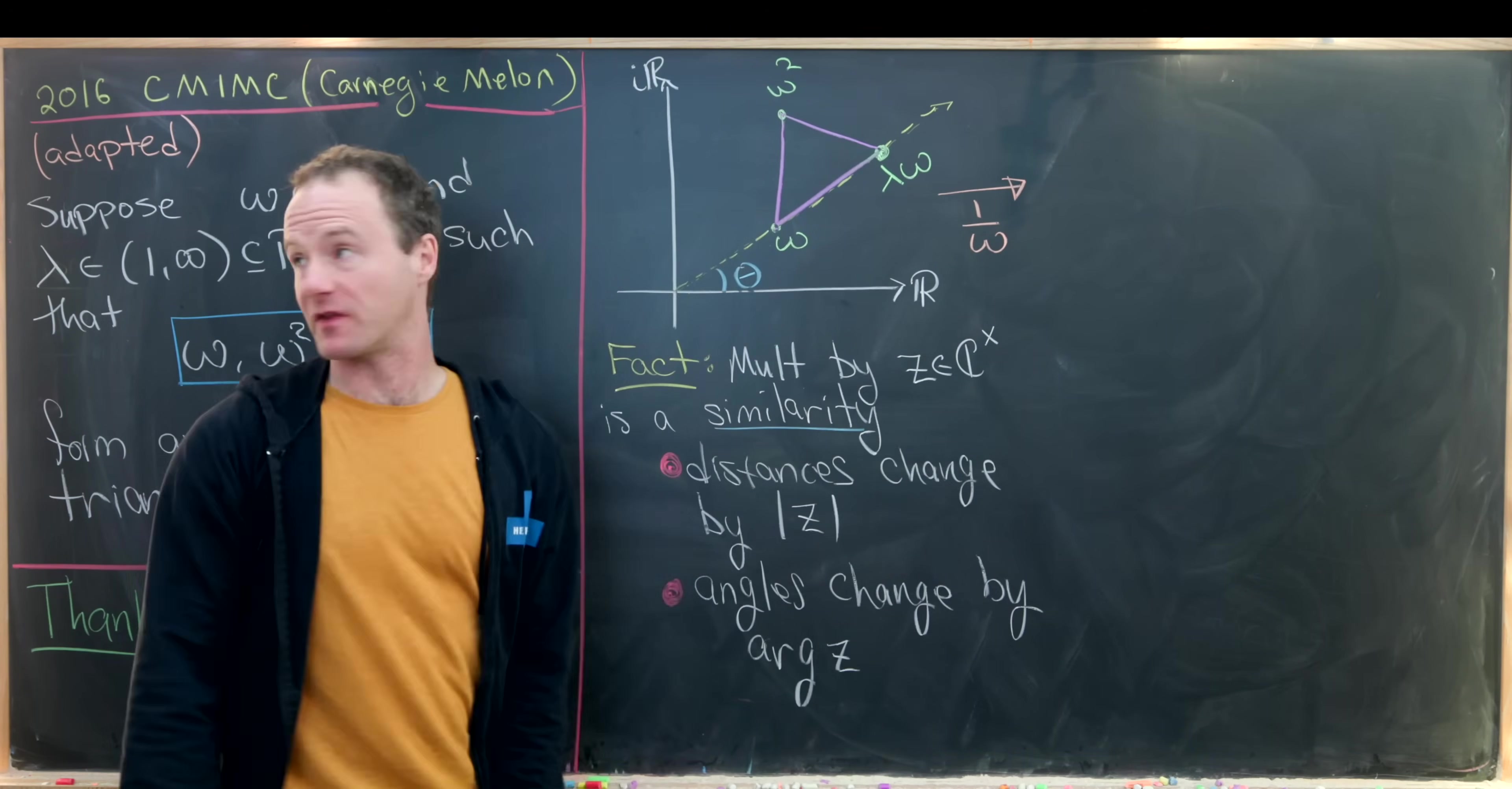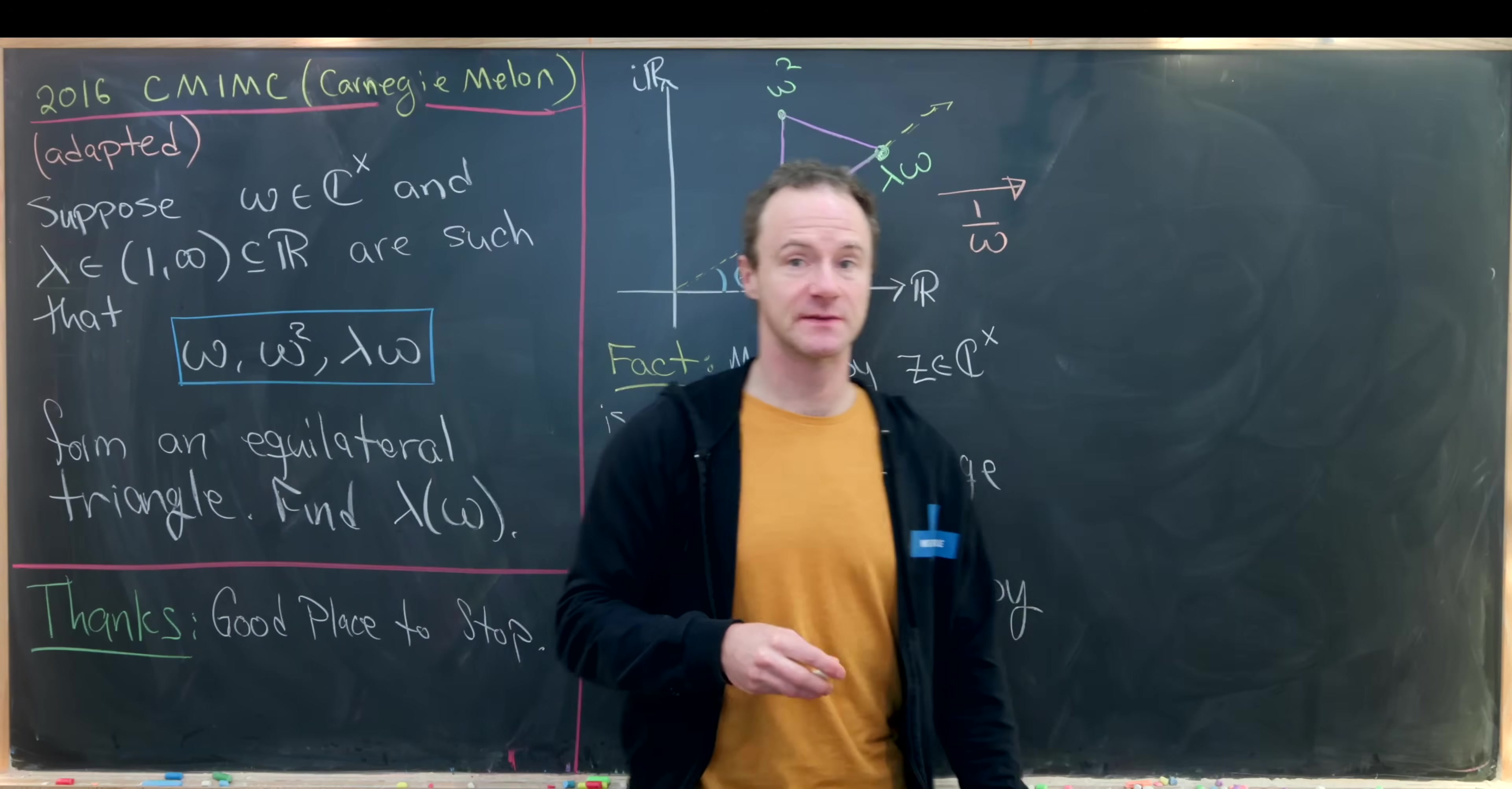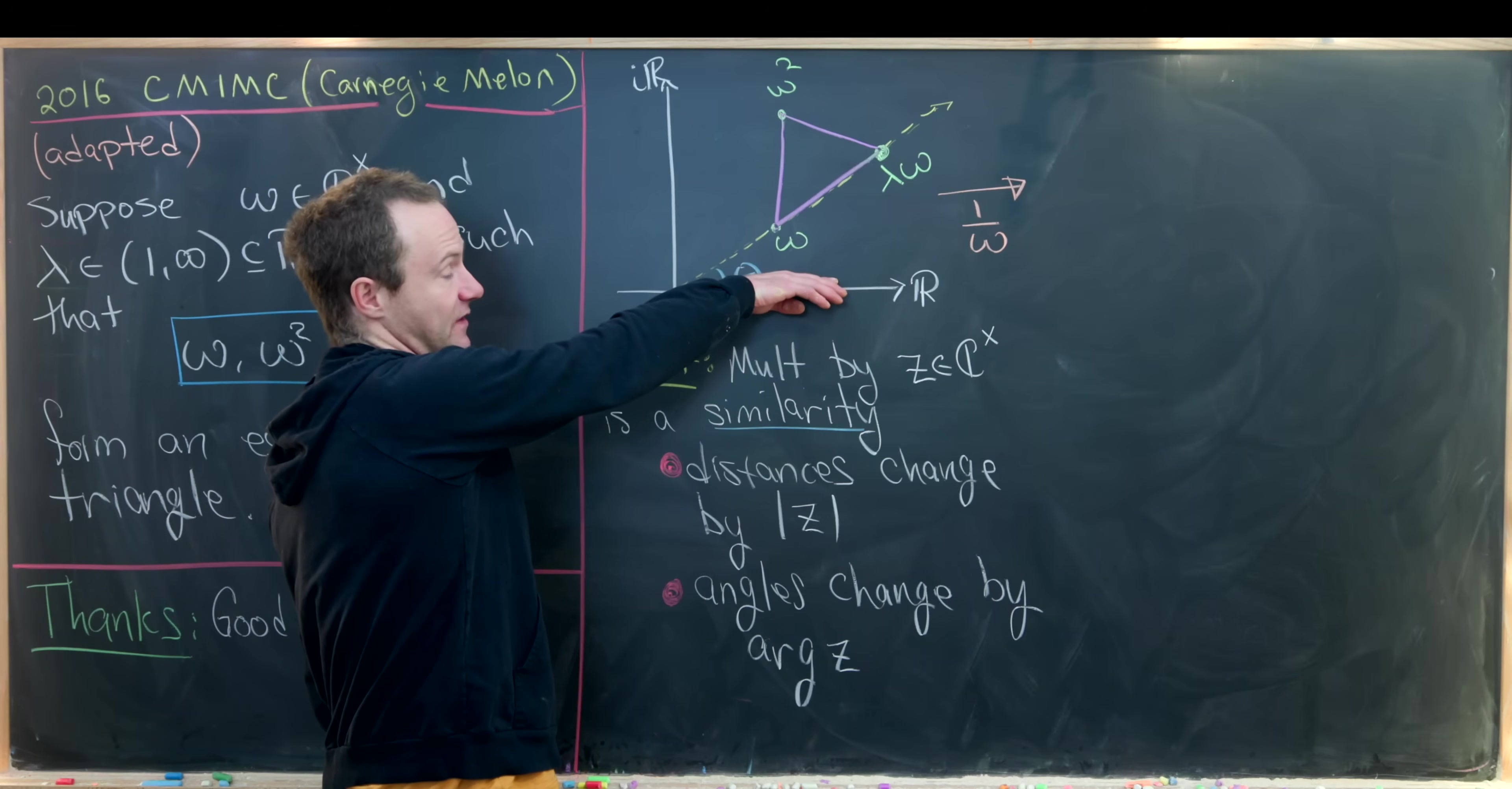And that advantageous complex number will be 1 over omega. And I guess I should have pointed out at the beginning that omega is not equal to 0. So we'll just add that in by saying that omega is in the non-zero set of the complex numbers. If we put a little x here, that's what that means. That's because it forms a multiplicative group.